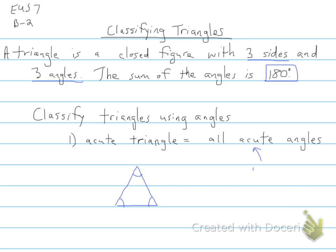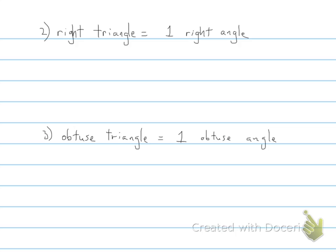Okay, our next type of triangle is the right triangle, and this is identified by having one right angle in it. So it's going to look like this, where you have one of the angles is a right angle.